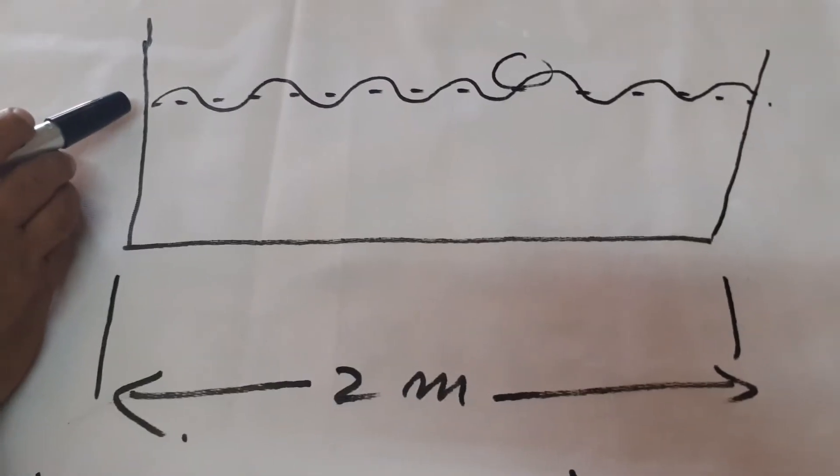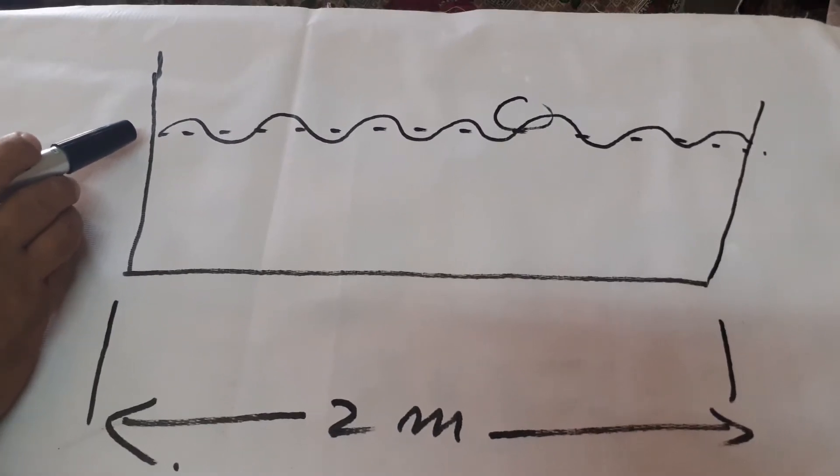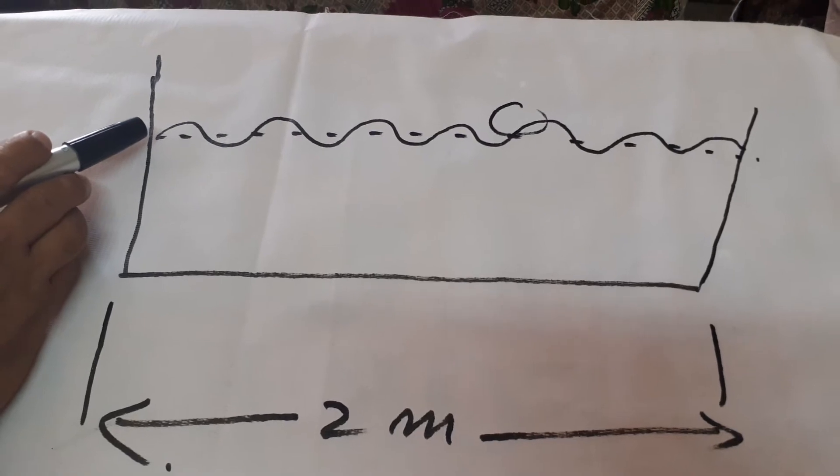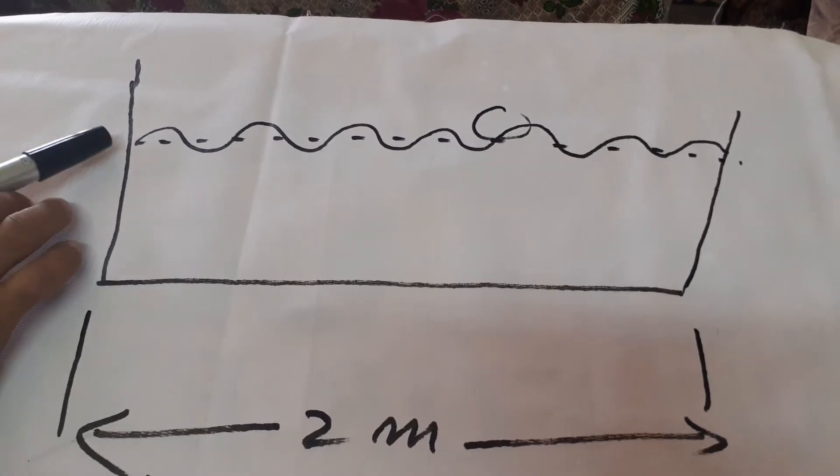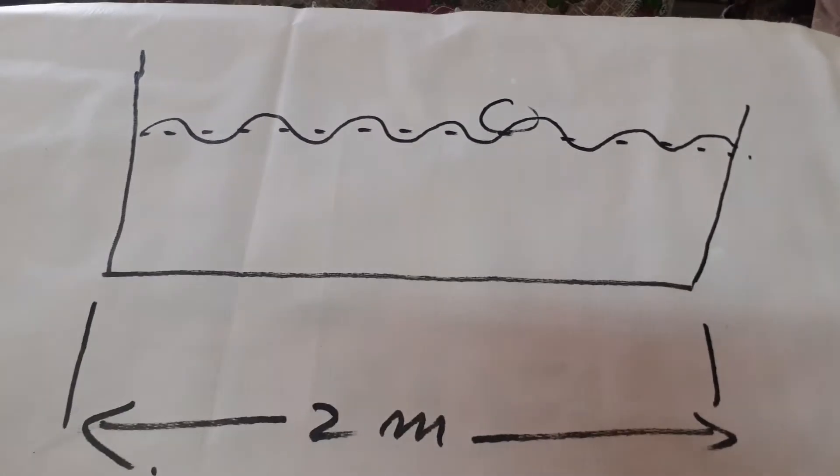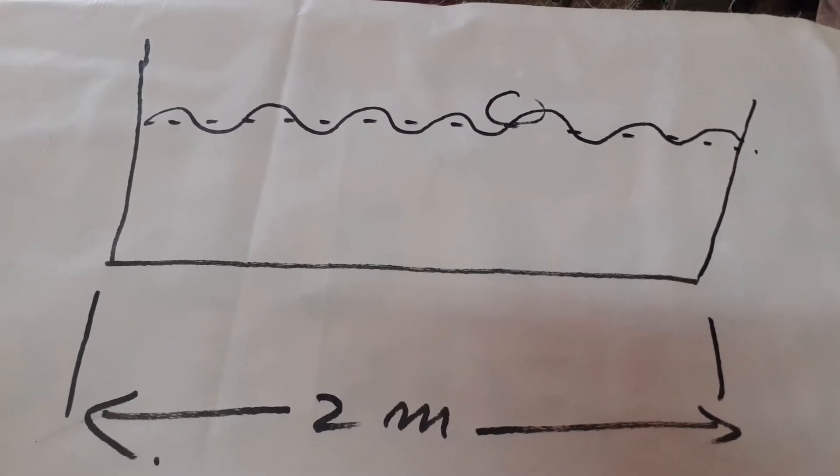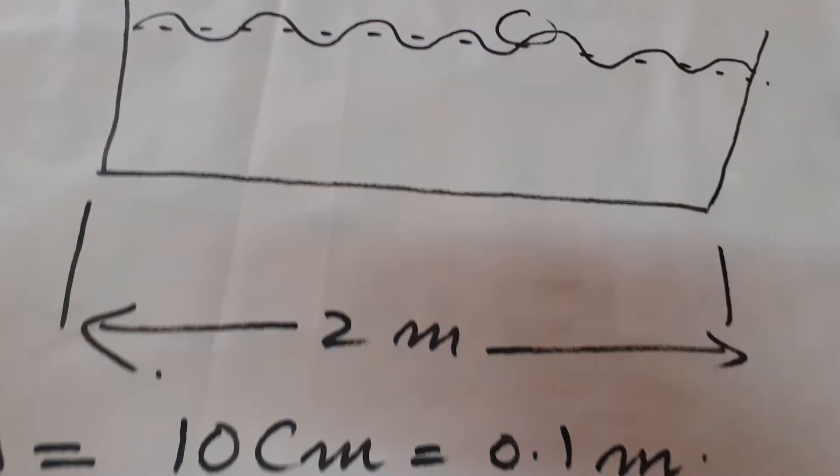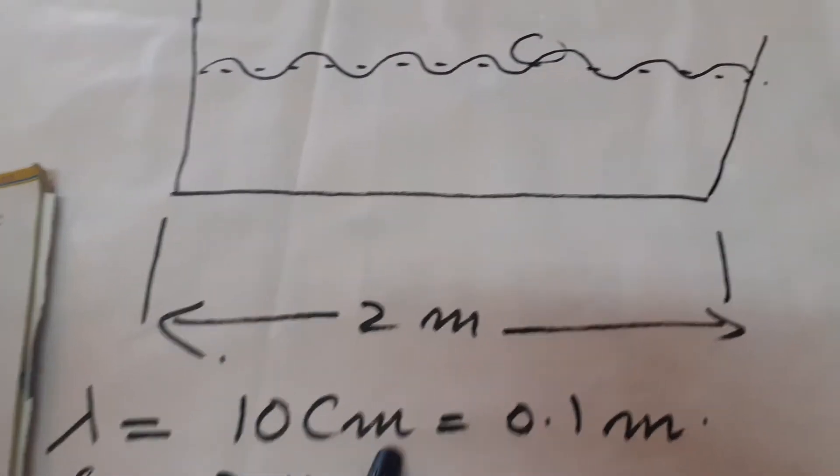The water waves cover the distance of 2 meters from one side to another side. The wavelength he measures is 10 centimeters.